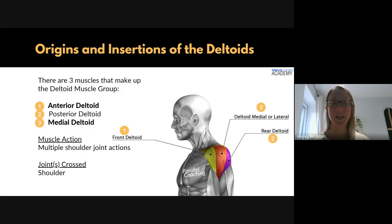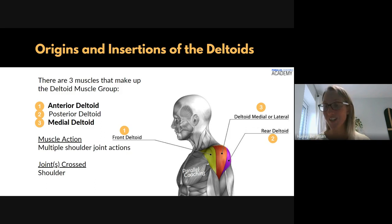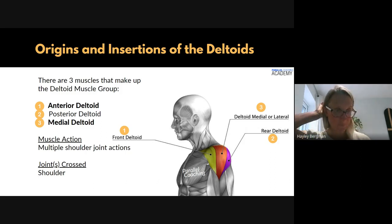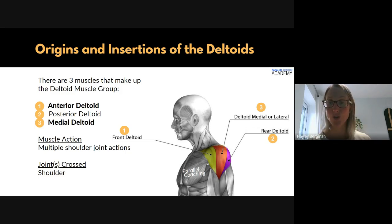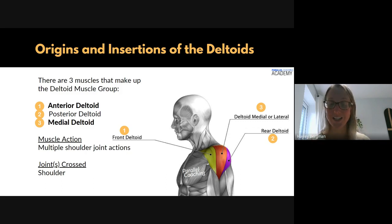There are different names that appear — it usually depends on whether it's a UK or American syllabus. From a UK syllabus you're looking for anterior, posterior, and medial. Some people do call them front, rear, and lateral, just so you know. The main muscle actions we need to know cover multiple shoulder joint actions because they're three different muscles doing different joint actions. They cover the whole cap of the shoulder and therefore cross just one joint — the shoulder.